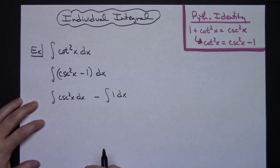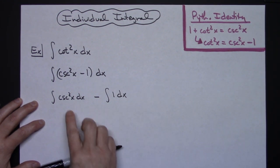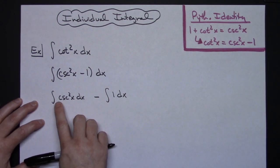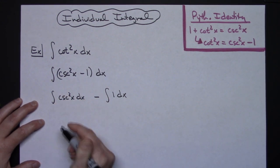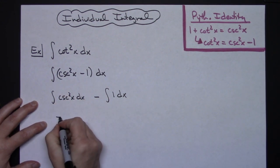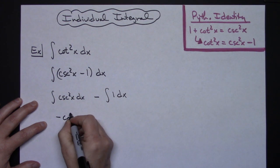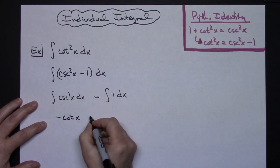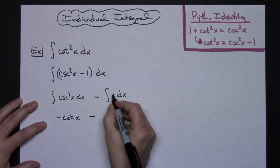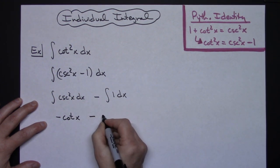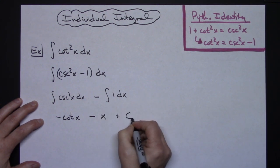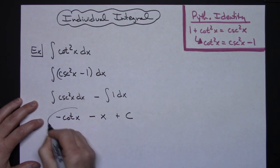Now both of these integrate really easily — you should have this memorized. The integral of cosecant squared x dx is going to be negative cotangent x. Then minus, integrating 1 with a dx gives me an x, and then we've got a plus C.